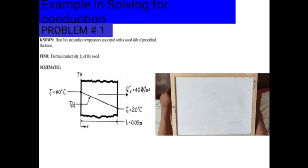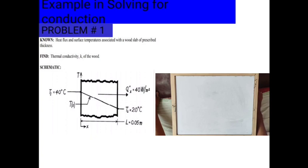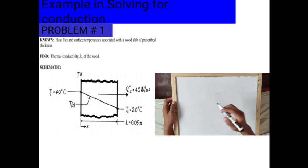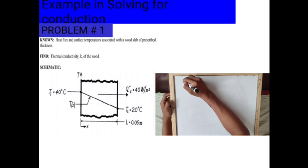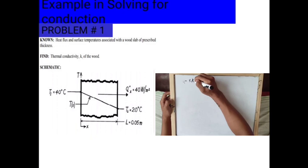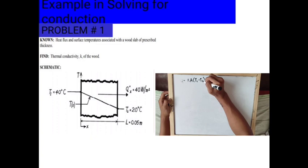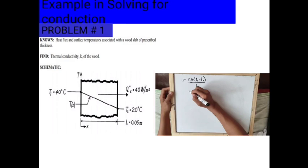Problem number 1: The known is heat flux and the surface temperature associated with a wood slab of prescribed thickness. Find the thermal conductivity, which is K. We're going to write the general formula, which is: heat transfer equals the thermal conductivity multiplied by the area times temperature 1 minus temperature 2 over X or L.